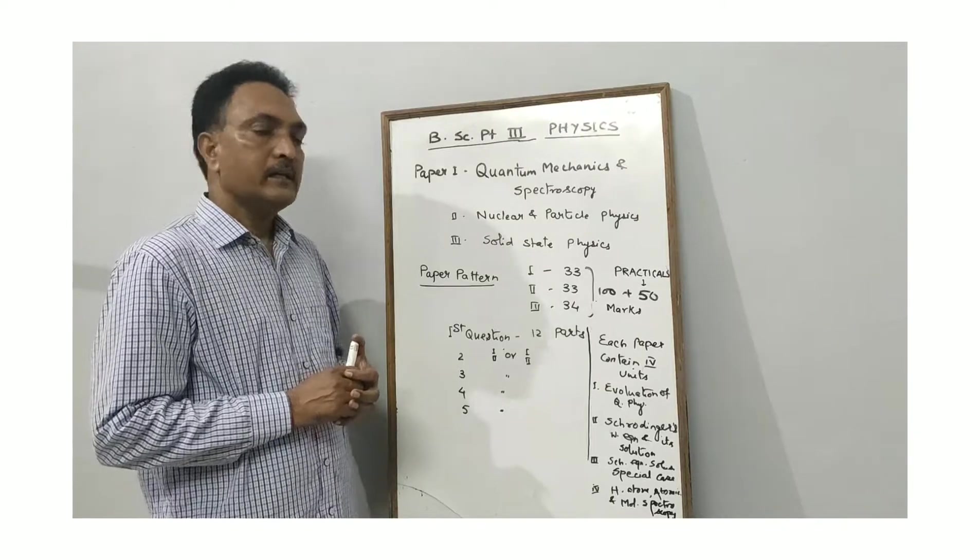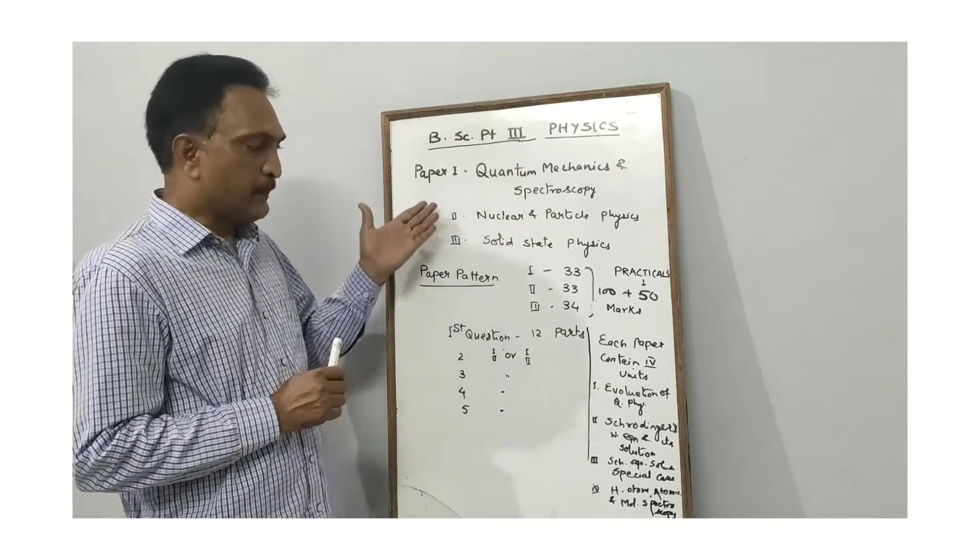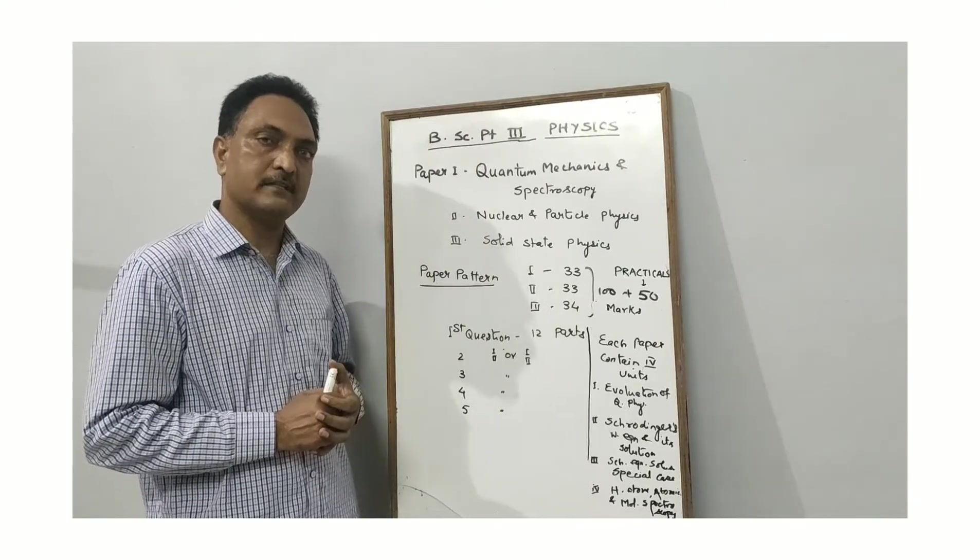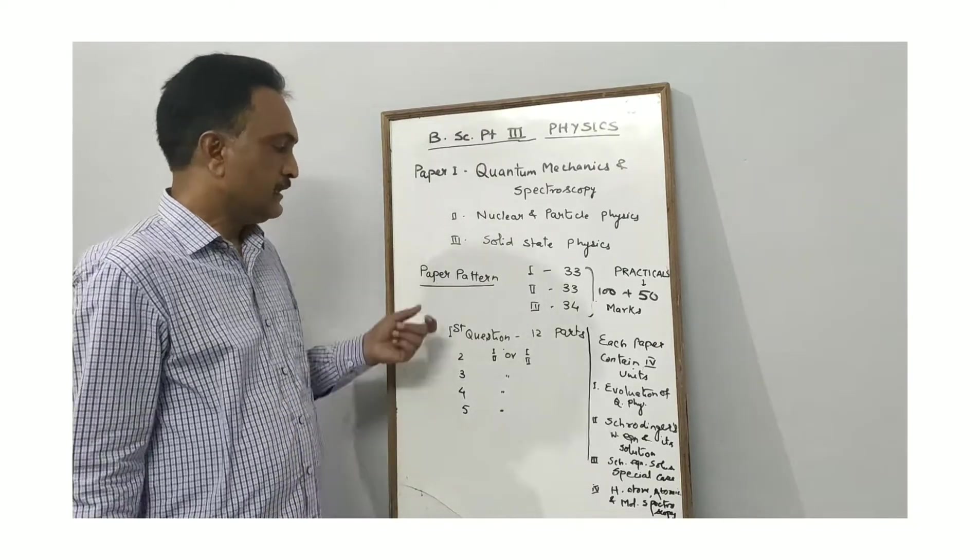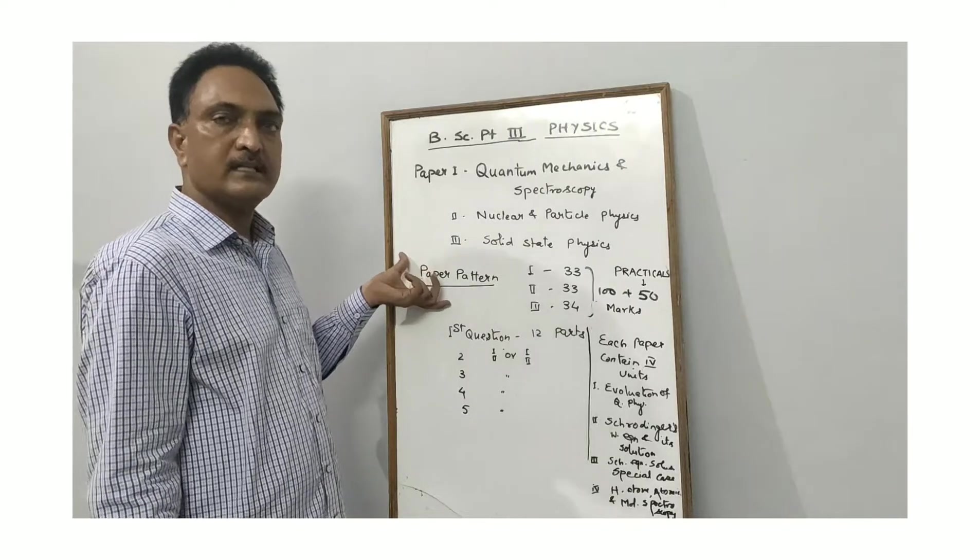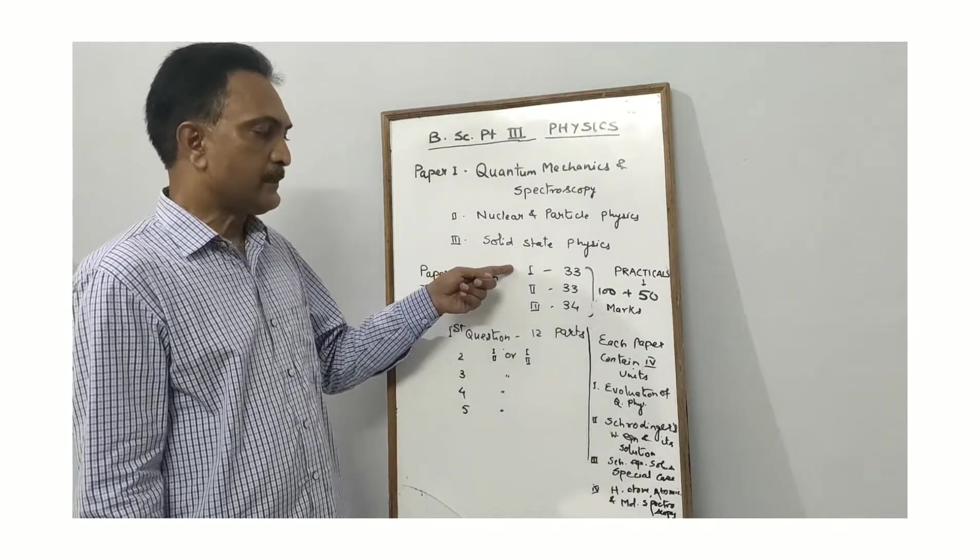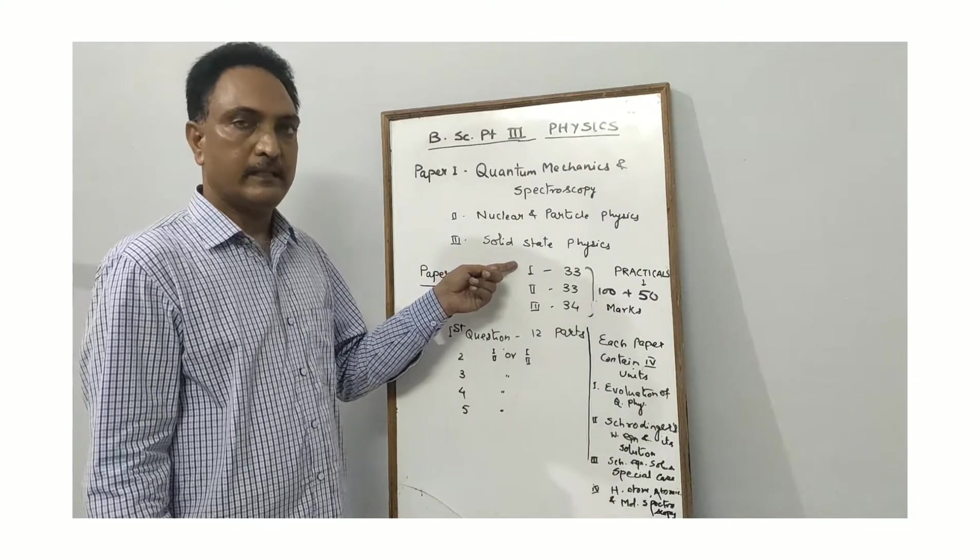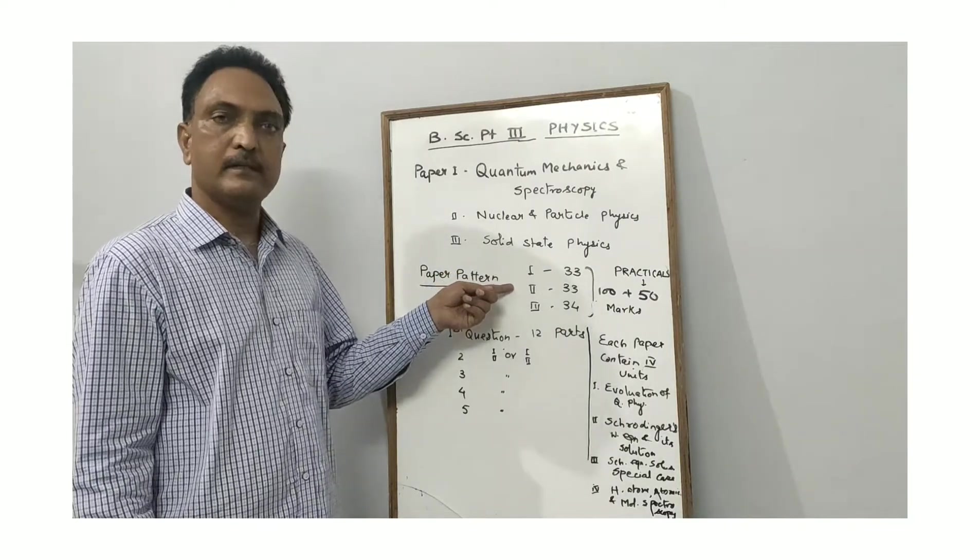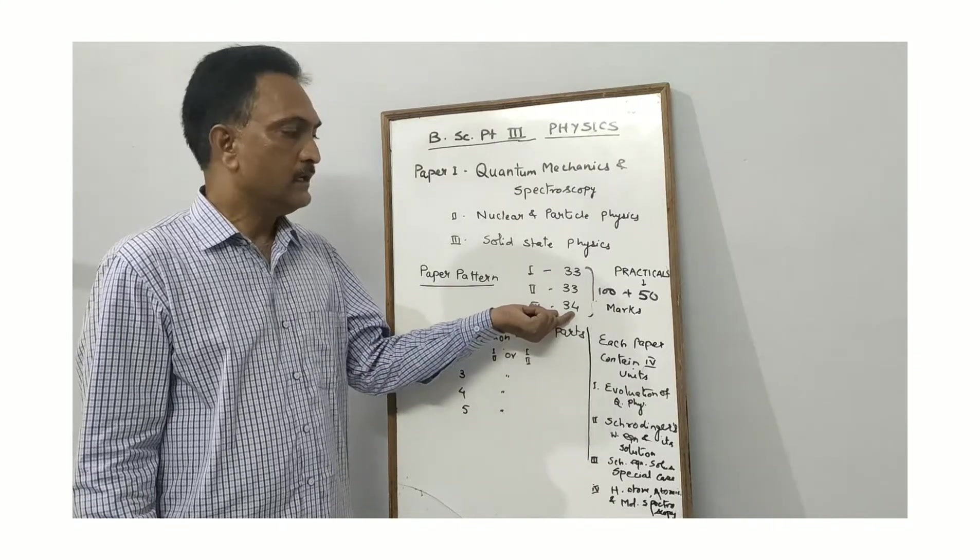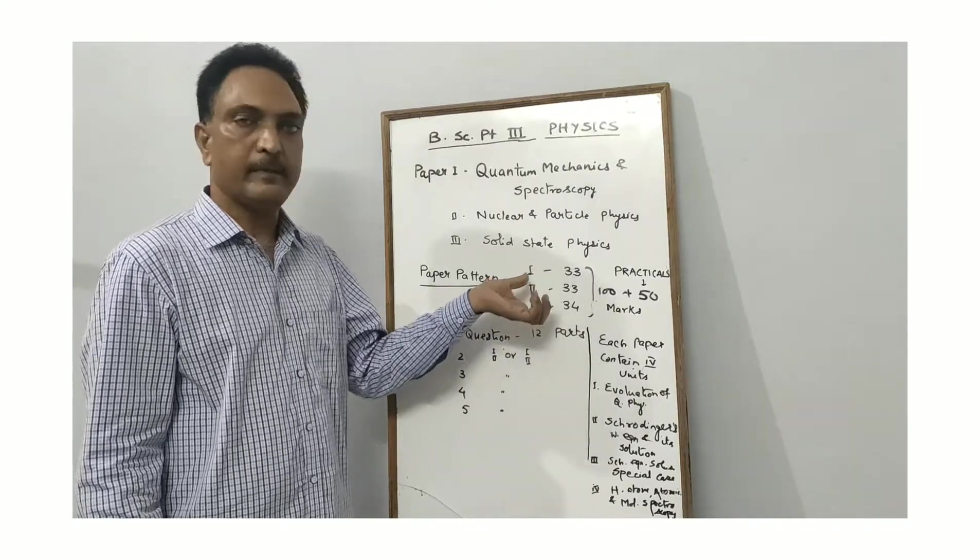In this paper pattern, your total syllabus is divided into three papers. The first paper is 33 marks, the second paper is 33 marks, and the third paper is 34 marks.